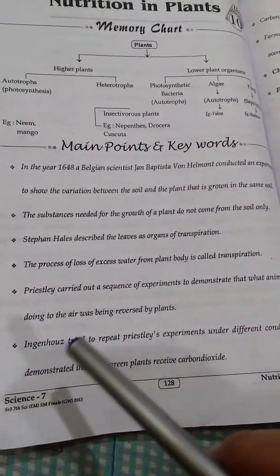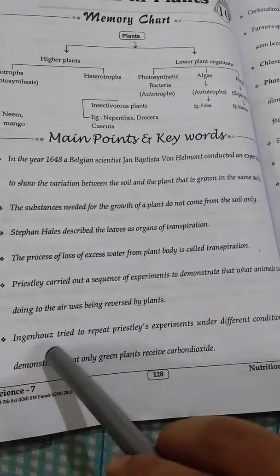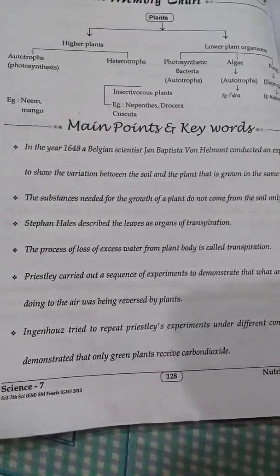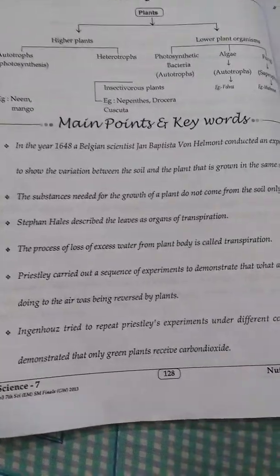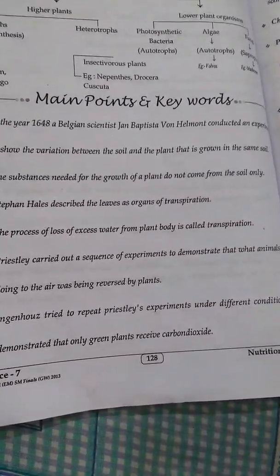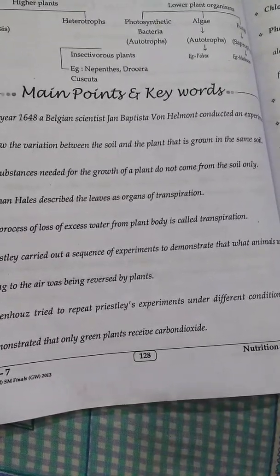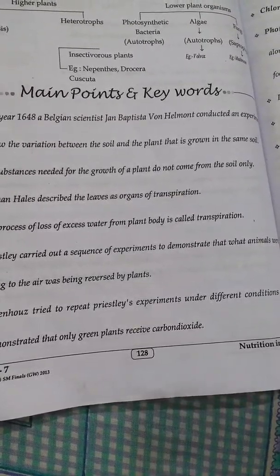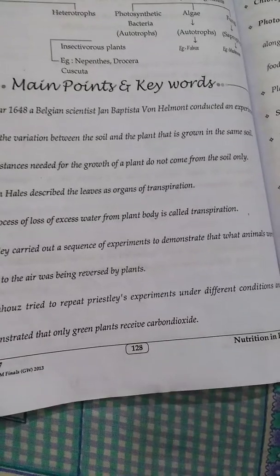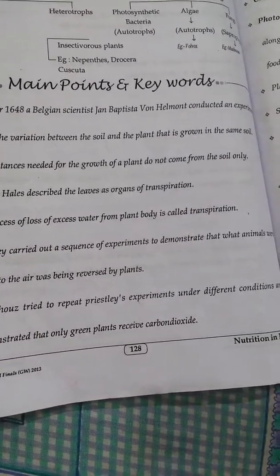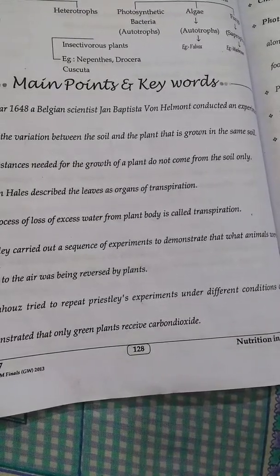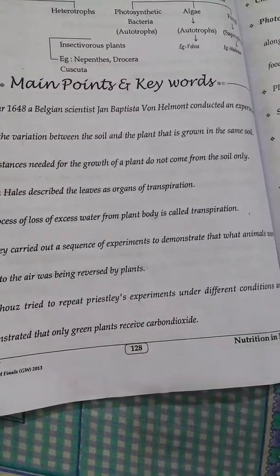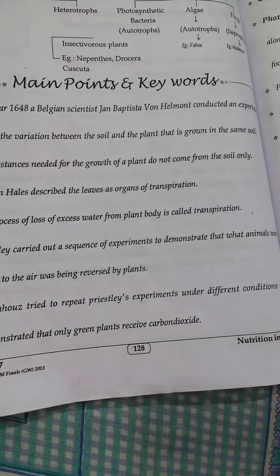Priestley carried out a sequence of experiments to demonstrate that what animals were doing in the air was being reversed by plants. Our animals make the air impure, but plants make the air pure. Another scientist tried to repeat Priestley's experiment under different conditions and demonstrated that only the green part of plants receives carbon dioxide. Plants consume carbon dioxide and release oxygen to the atmosphere.